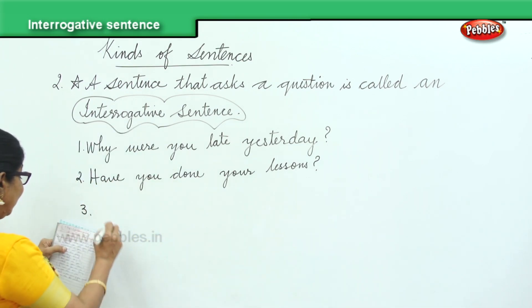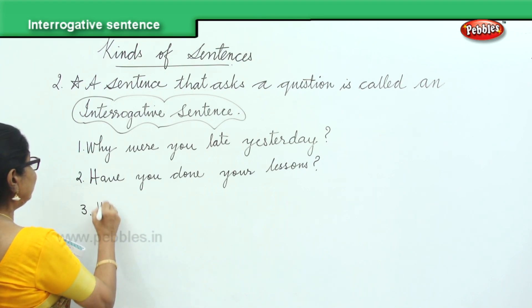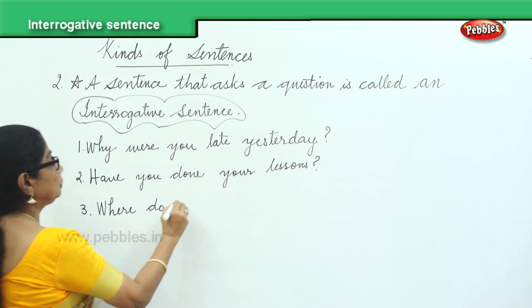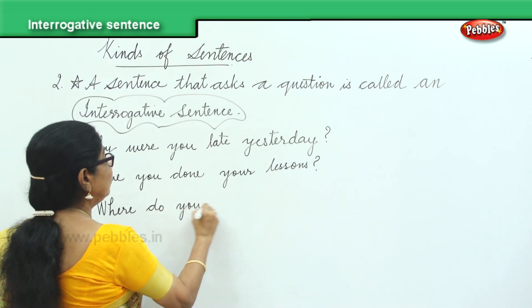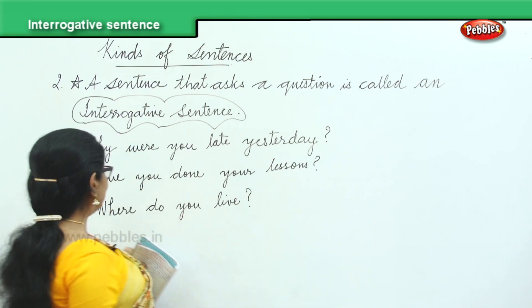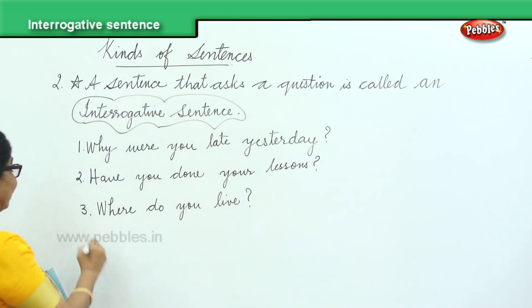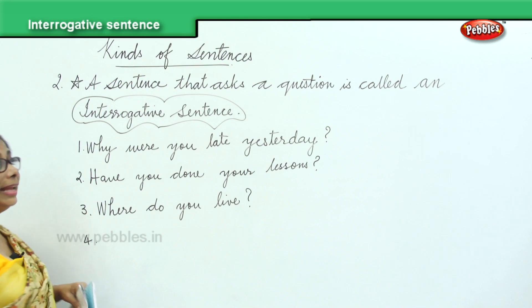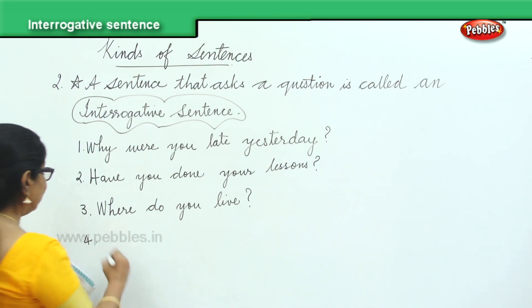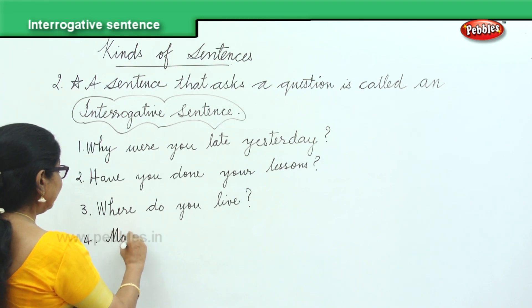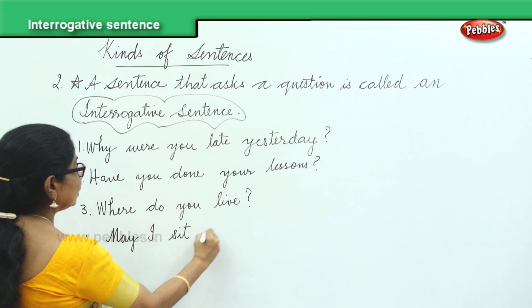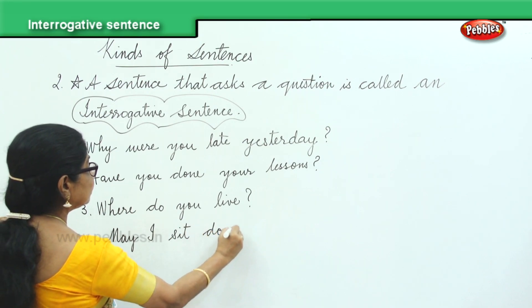Where do you live? It begins with a capital letter and ends with a question mark — that's called an interrogative sentence. May I sit down? May I sit down?